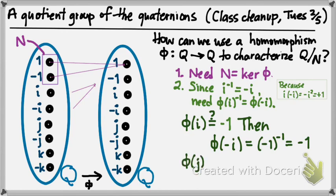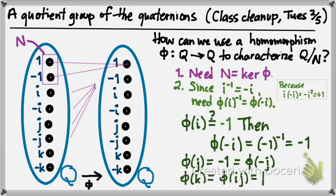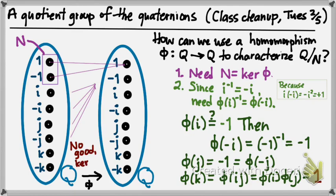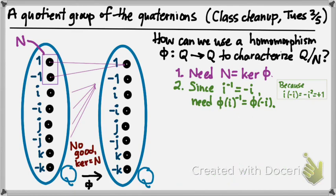But then where does j go? Suppose we do the same thing with j: if j goes to -1, then for the same reason -j also has to go to -1, and the same has to be true for k. Except that if φ is a homomorphism, φ(k) = φ(ij) = φ(i)·φ(j). If φ(i) and φ(j) are both -1, then φ(k) = (-1)(-1) = +1. That's no good, because while it still gives a homomorphism, the kernel also has k in it. We wanted the kernel to consist only of the two elements +1 and -1. So this doesn't work.